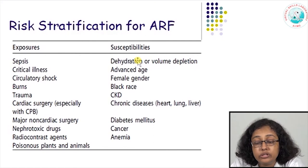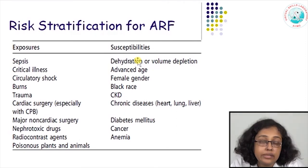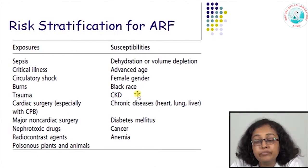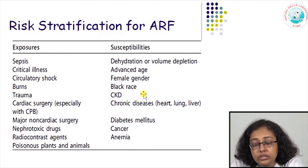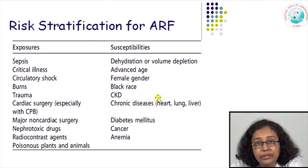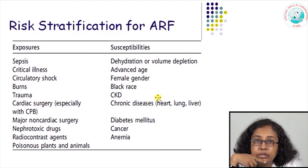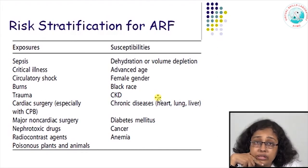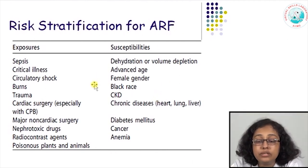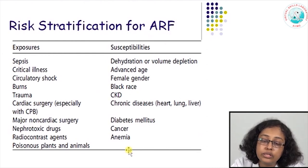Similarly, advanced age, elderly patients, females, black race, patients with underlying chronic kidney disease — as noted, acute kidney injury can develop superimposed on chronic kidney disease. Any chronic disease involving major systems — heart disease, chronic liver disease — if the patient is given a nephrotoxic antibiotic or painkiller, he is more susceptible. Diabetes is the commonest cause of chronic kidney disease, so diabetic patients are at increased risk. Malignancies and patients treated with chemotherapy or radiation therapy, and anemic patients — if any patient has these susceptibilities, they have a higher risk of developing acute renal failure with those exposures.